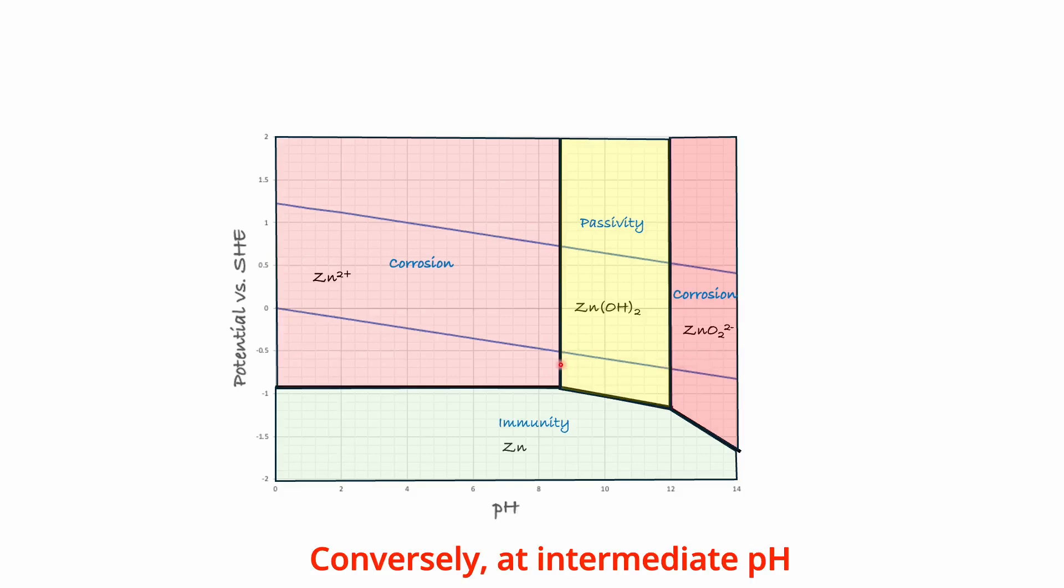Conversely, at intermediate pH levels, the stable species is zinc hydroxide. In this region, even though the metal can oxidize thermodynamically, the formation of a solid zinc hydroxide film acts as a barrier between the metal surface and the aqueous environment, significantly slowing the rate of corrosion. Therefore, we refer to this region, characterized by a protective zinc hydroxide film, as a passive region, and we say that in these conditions the material is passive.